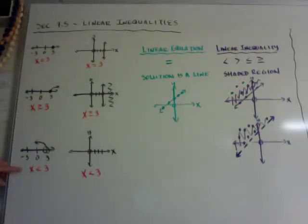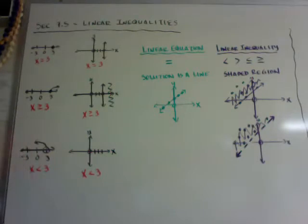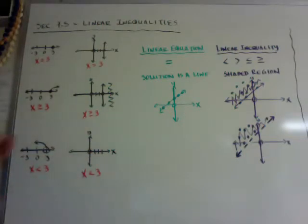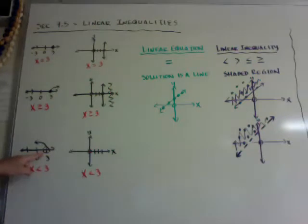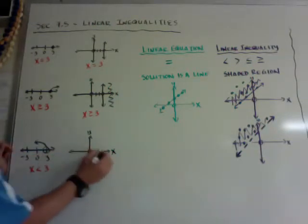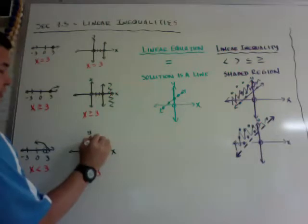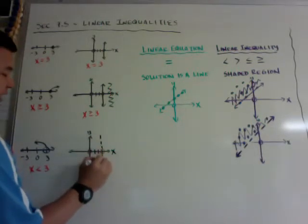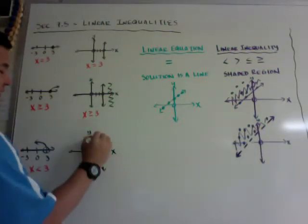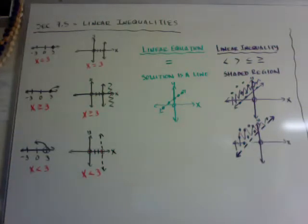Here's a different one. If I wanted to graph x is less than 3, it's an open circle going to the left — everything left of 3, not including the 3. So if I wanted to graph x is less than 3 on a 2D graph, instead of using a solid line like a closed dot, I need an open dot and a dashed line instead of a solid line. That means it doesn't include it — it's like having an open circle.